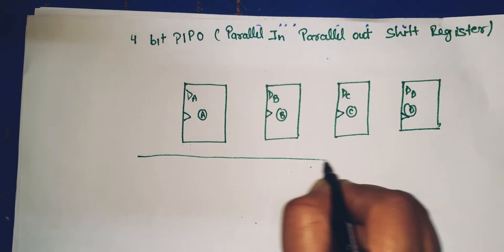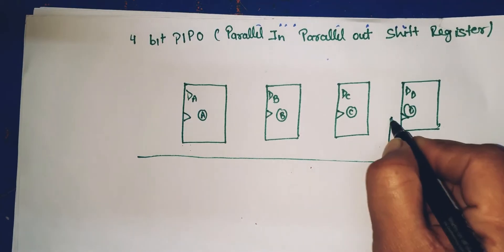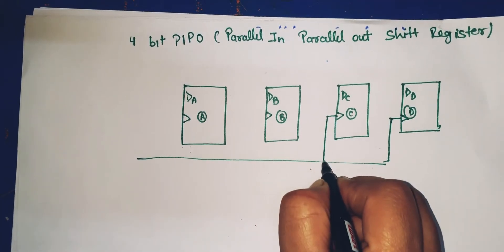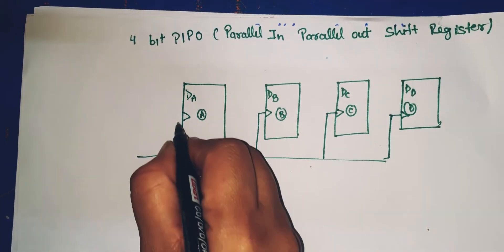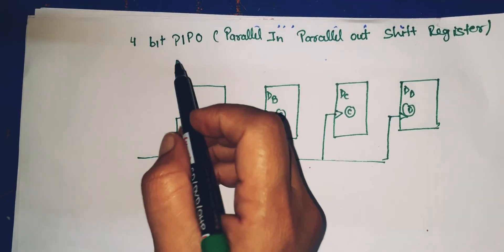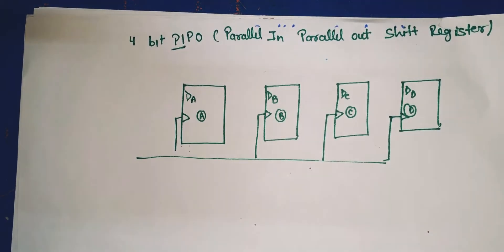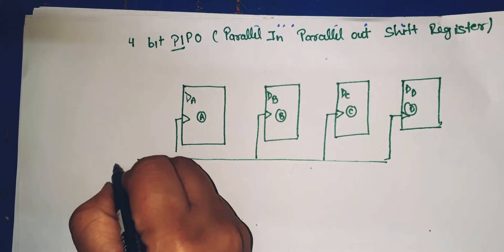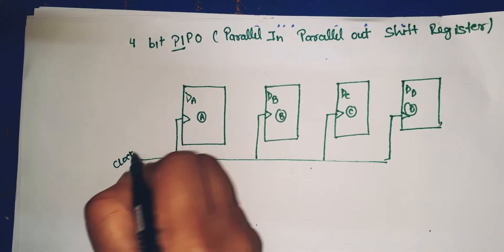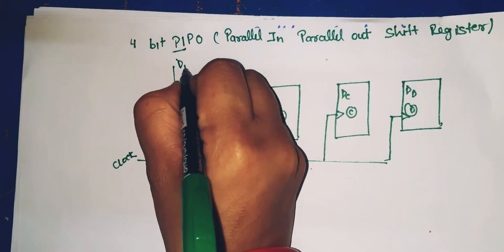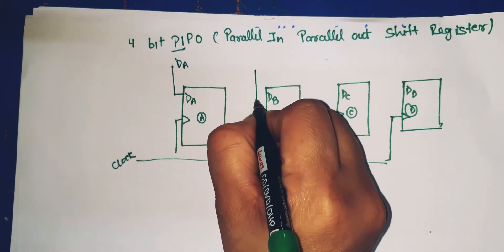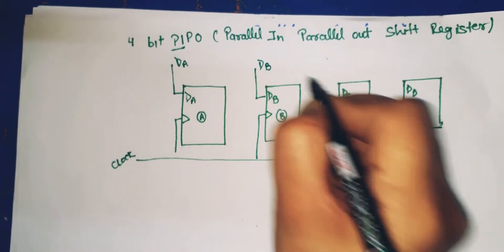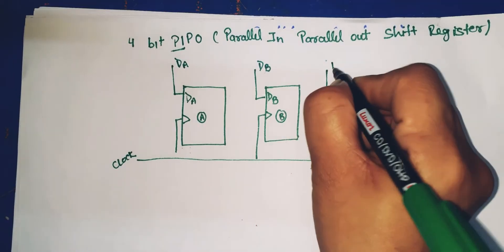The clock will be applied simultaneously to all flip-flops, so in one clock pulse all flip-flops will be triggered. This is a parallel input, meaning the input is applied to all flip-flops at the same time — parallelly. This is our clock pulse.